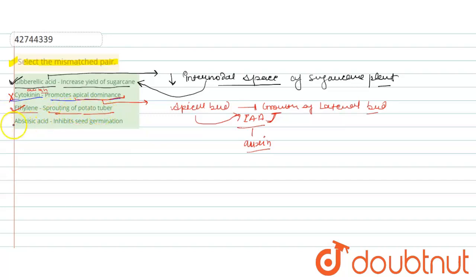And next one is abscisic acid, and abscisic acid inhibits the seed germination. So this is also correctly matched.